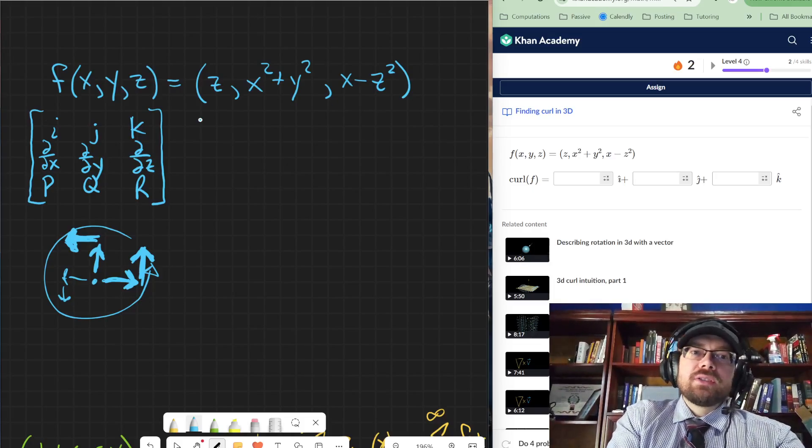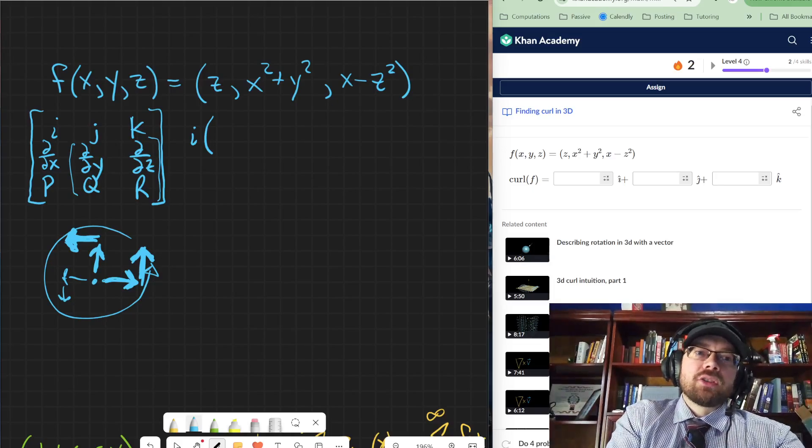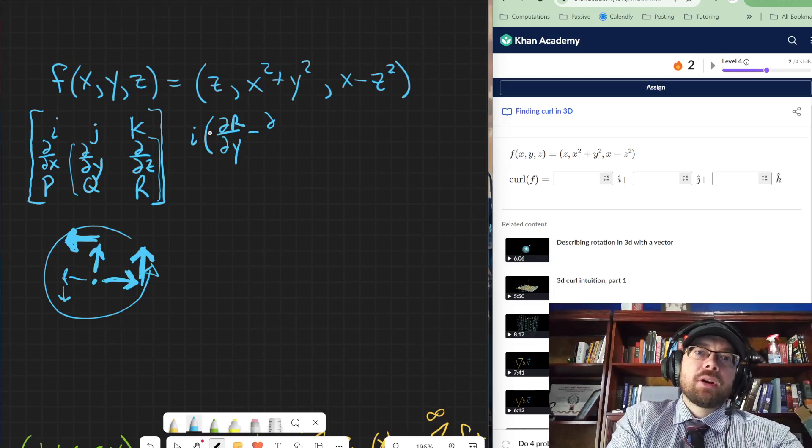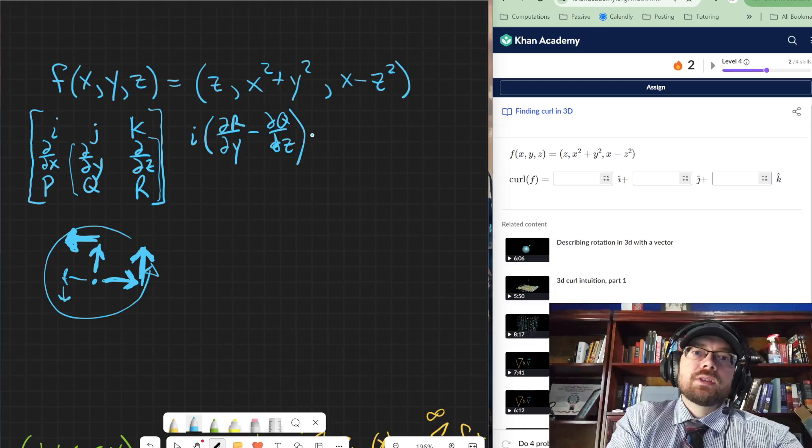And that's basically what we do. So if we're going to do the determinant of the matrix, it's going to be the i vector multiplied by the determinant of this 2 by 2 matrix right here. So that's going to be the partial derivative of y of r. So it's going to be the partial of r with respect to y minus the partial of q with respect to z.